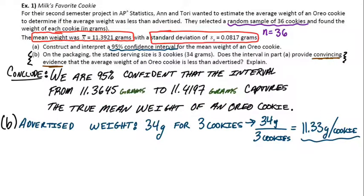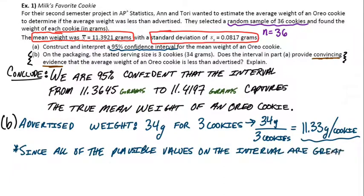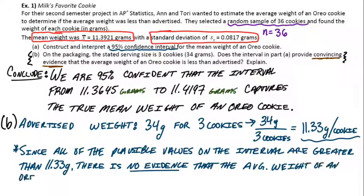So if we compare this value to our interval, the whole interval is above that. So this isn't evidence that Oreos actually come out weighing less than they're advertised. Our interval was actually above the stated value. So we can say, since all of the plausible values on the interval, all of these values, are actually greater than the 11.33 grams, which was the advertised weight for a single cookie, this wouldn't be evidence to suggest that for some reason the cookies are lighter than the company claims. In fact, we're over their claim. So based on our interval, there's no evidence. There's no evidence that the average weight of an Oreo cookie is less than advertised.